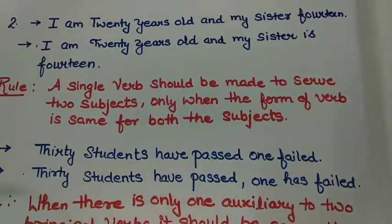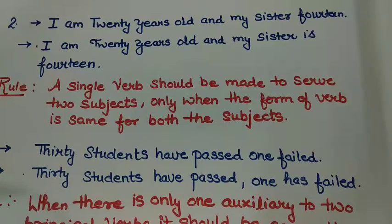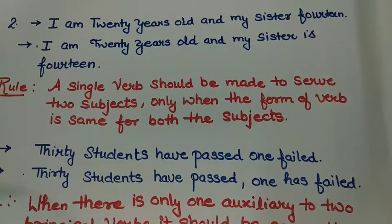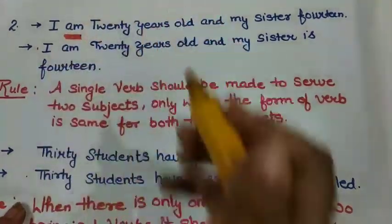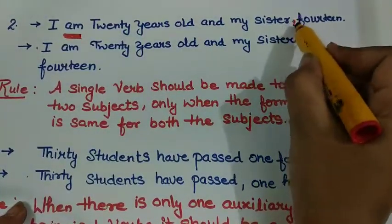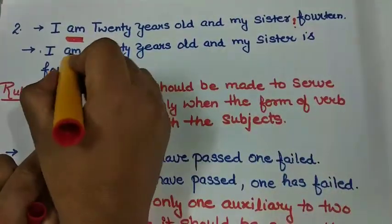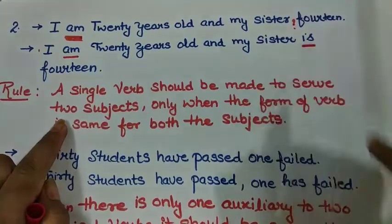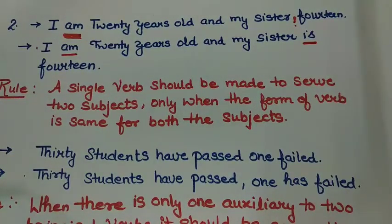Moving on to the second example. Again I have written two sentences to compare the correct and incorrect. The first sentence says: 'I am 20 years old and my sister 14.' The second says: 'I am 20 years old and my sister is 14.' The difference is that 'am' is used with 'I' but no verb is used with 'my sister' in the first sentence. According to the rule, a single verb should be made to serve two subjects only when the form of the verb is the same for both subjects.